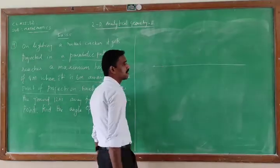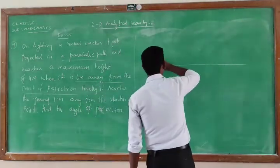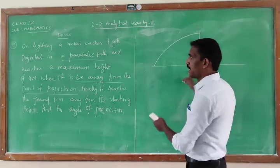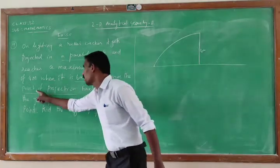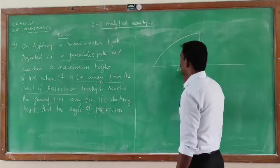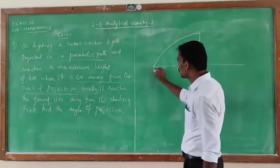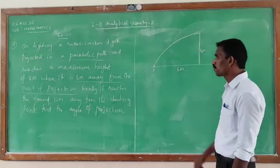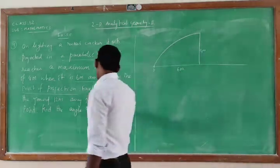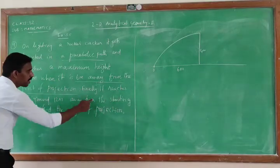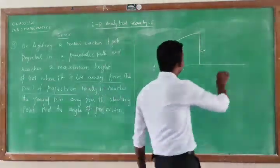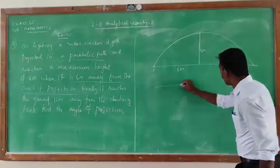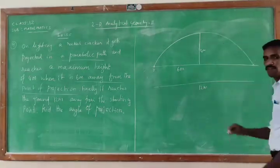A rocket tractor fires here. It reaches a maximum height of 4 meters when it is 6 meters away from the point of projection — so it is 6 meters. This is the point of projection. It gets a maximum height of 4 meters when it is 6 meters from the point of projection. Finally, it reaches the ground 12 meters away from the starting point.